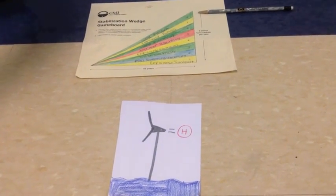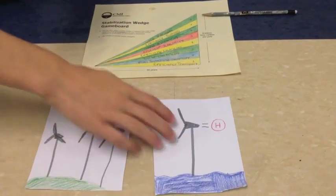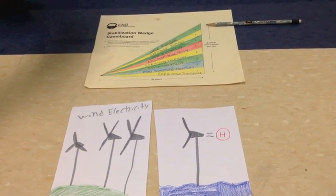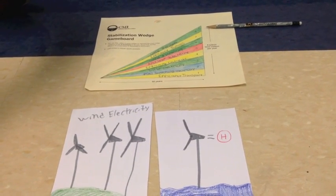Our eighth wedge is wind hydrogen. This helps produce hydrogen with wind electricity. This wedge helps with transportation and heating and direct communities.